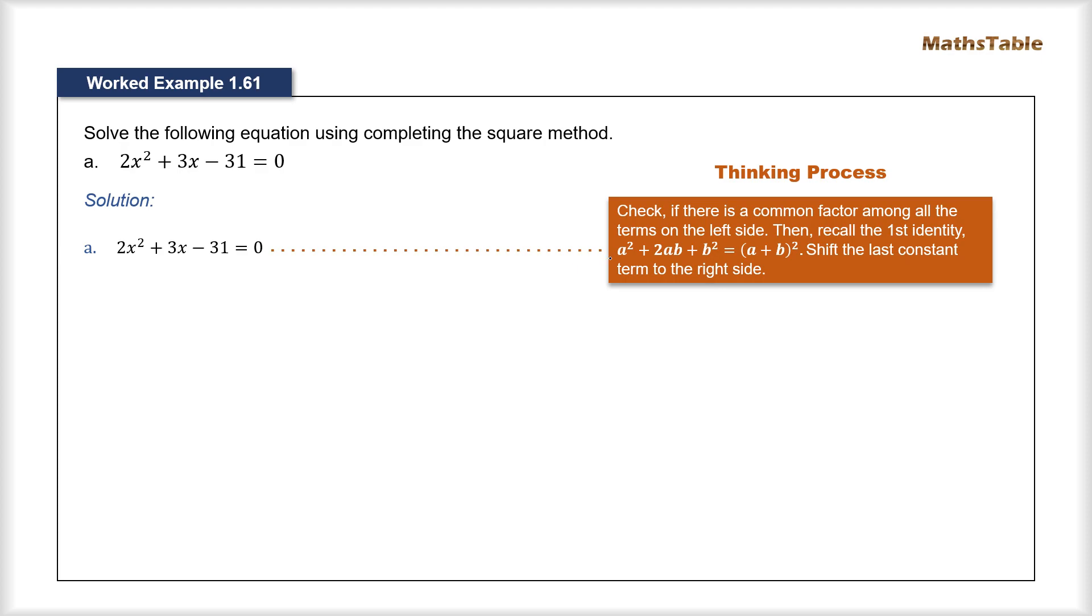Now the second step is to compare this expression with the first identity which we discussed earlier based on the positive sign of the second term. Now what we can see on the left side of this first identity is that the first and the last terms are both perfect squares. But here in our given expression we can see very clearly that neither the first nor the last terms are perfect square.